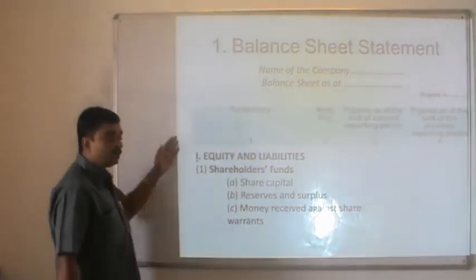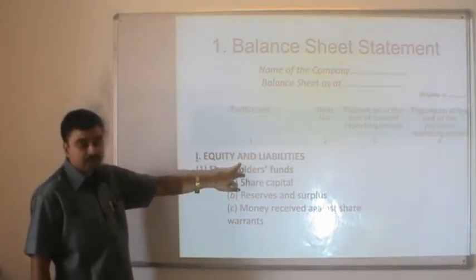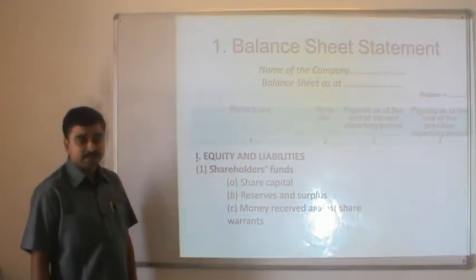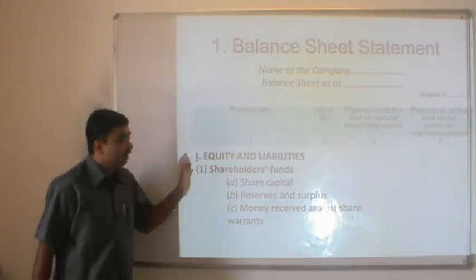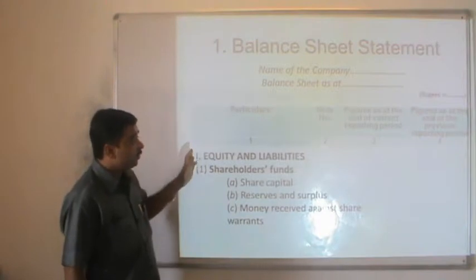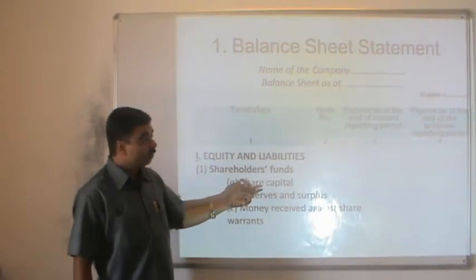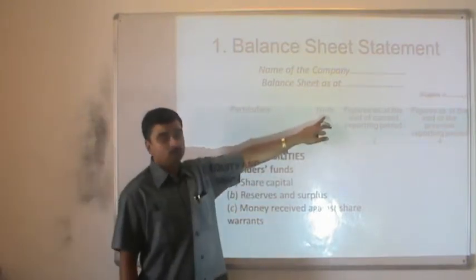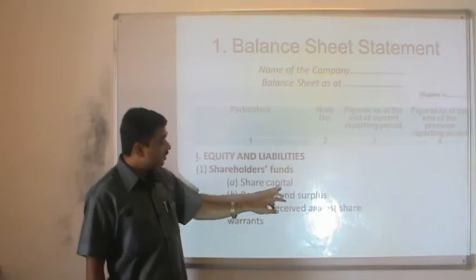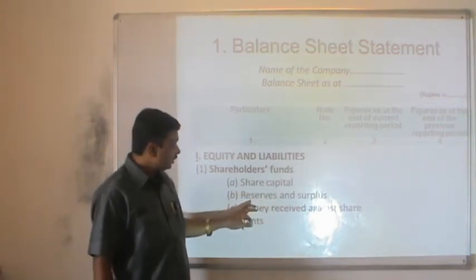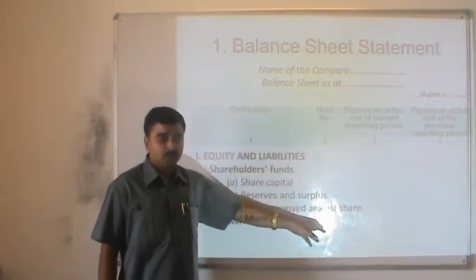The balance sheet will be prepared in statement format which has two major points: number one is equity and liabilities, and number two is assets. The format suggests that the company has to prepare the balance sheet with detailed information about these points, known as notes of accounts. When a company prepares the final accounts, the details like share capital, reserve and surplus, and money received against share warrant are written in particular notes of accounts.